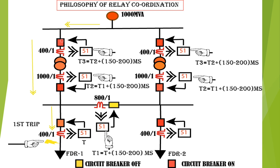This is how relay coordination is done in a particular substation. The bus coupler overcurrent relay acts as a backup for the feeder overcurrent relay. The LV side overcurrent relay acts as backup for both feeder and bus coupler overcurrent relays. And the HV side overcurrent relay acts as backup for all three overcurrent relays. This is the basic philosophy of relay coordination in a substation.